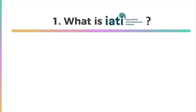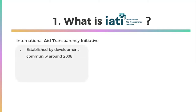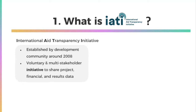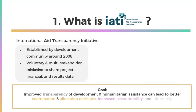IATI stands for the International Aid Transparency Initiative. It was established around 2008 by various stakeholders in the development community and is a voluntary multi-stakeholder initiative to share project, financial, and results data about organizations and their individual development and humanitarian activities. Improving transparency of these activities can lead to better coordination among relevant stakeholders, improved allocation decisions, increased accountability, and ultimately better development outcomes.